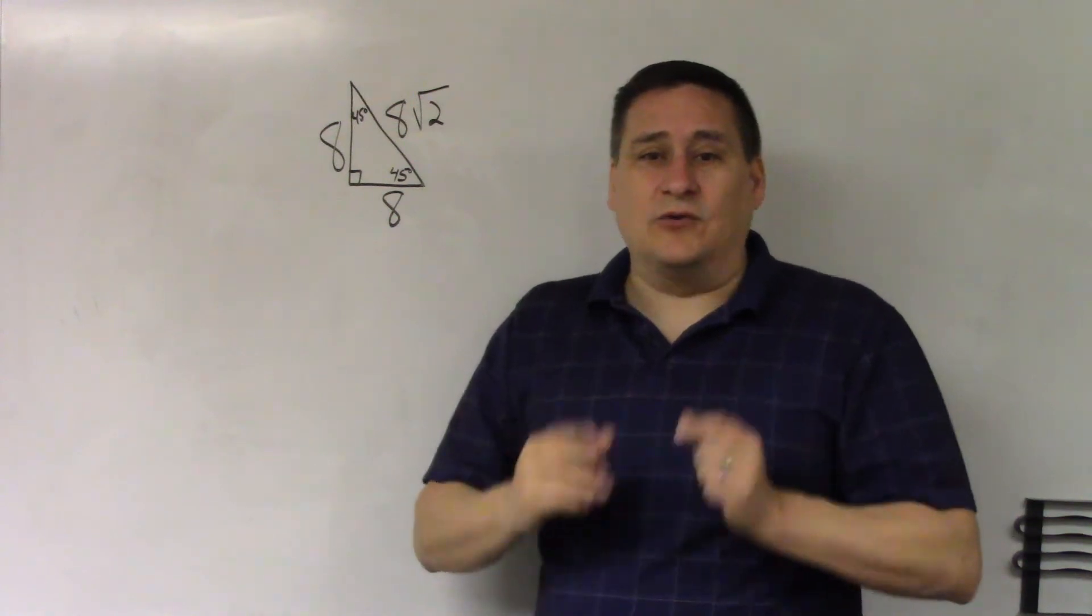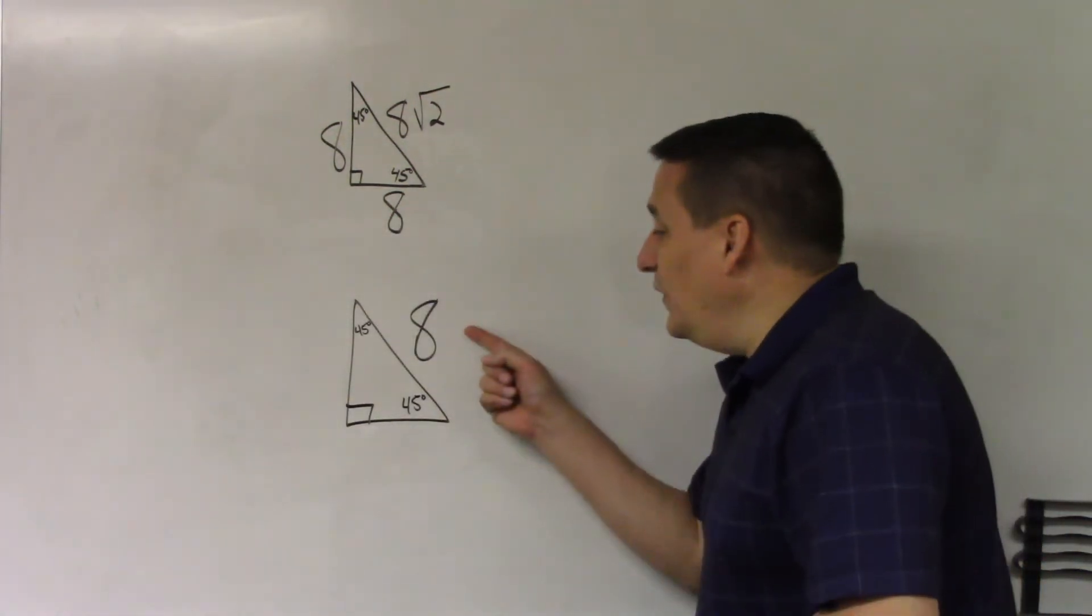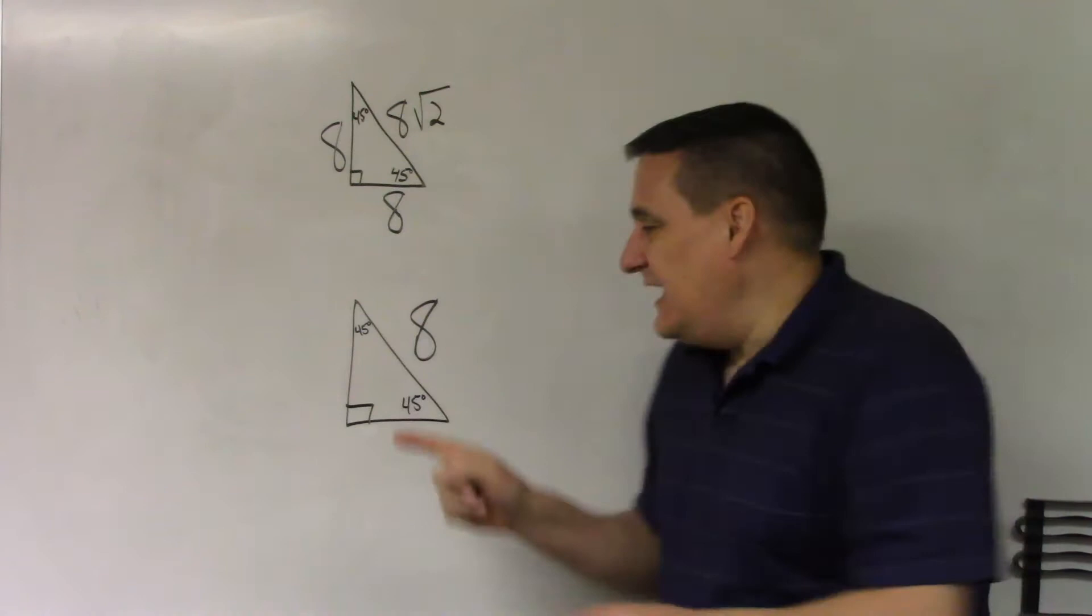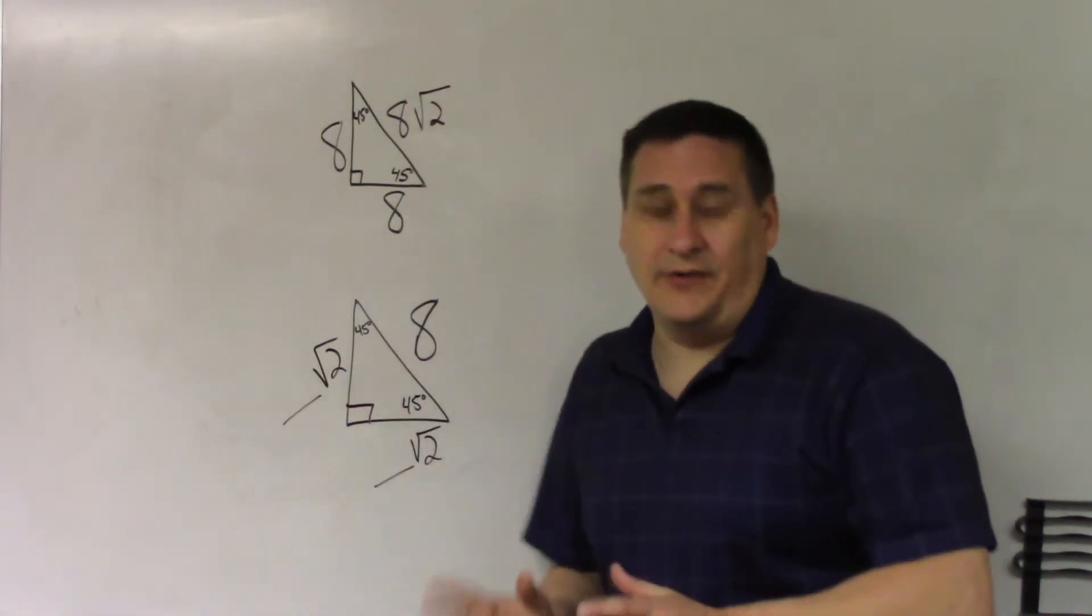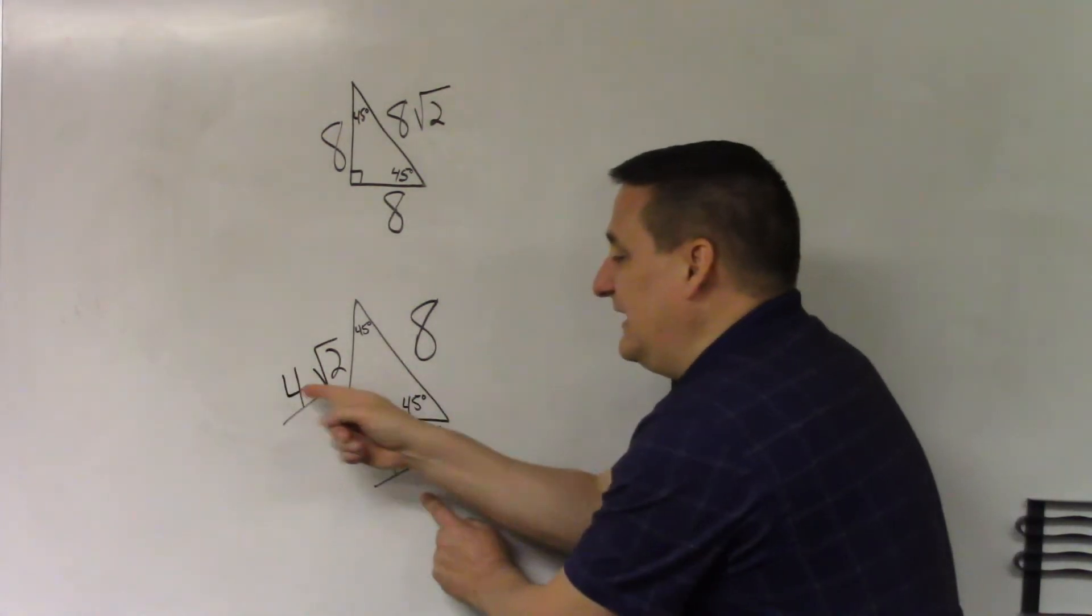You also need to memorize it backwards. Here's what I mean. So what happens when the square root of 2 is not in the hypotenuse like you expect? Easy. It's gone to the sides. The only question is, what is the coefficient that I multiply times the square root of 2? Also easy. Just take the 8 and split it evenly.